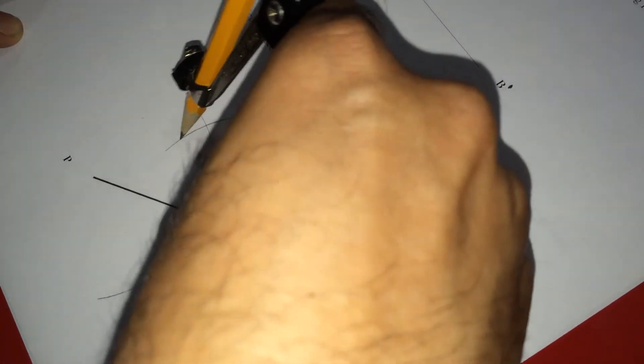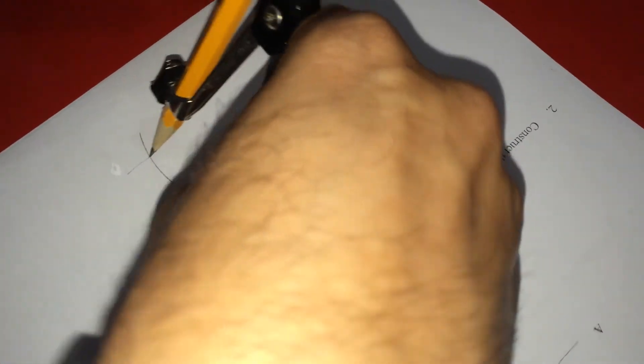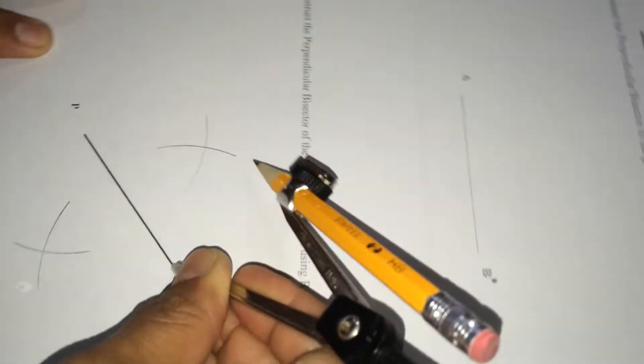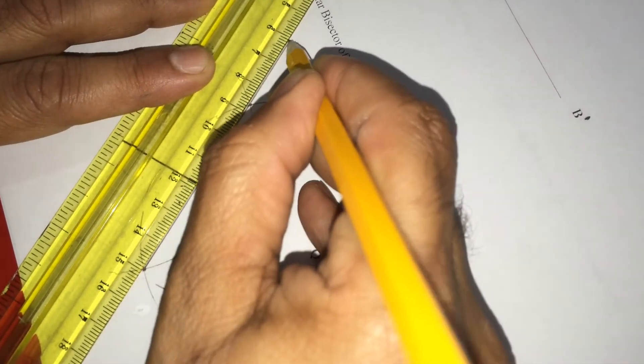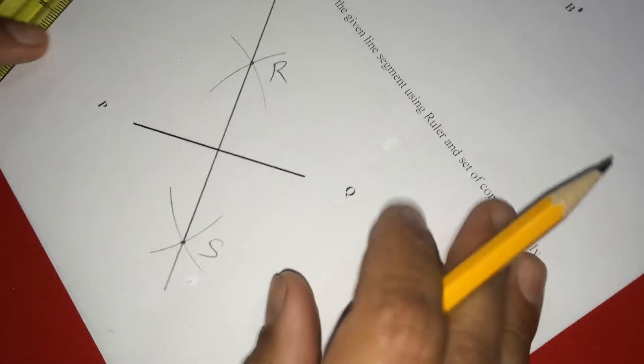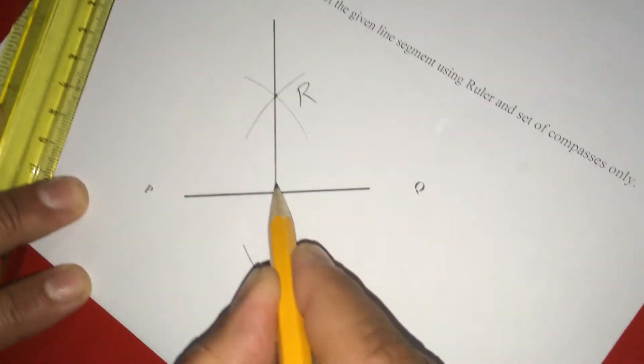And this is the second one. I am naming these points for our reference, R and S. So this is S and this is R. If I join this S and R using a ruler, see we get the perpendicular bisector for this line PQ.